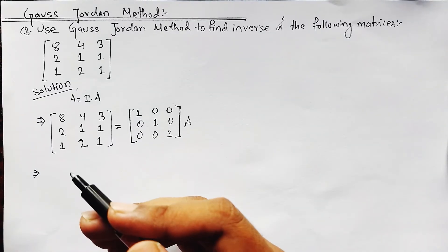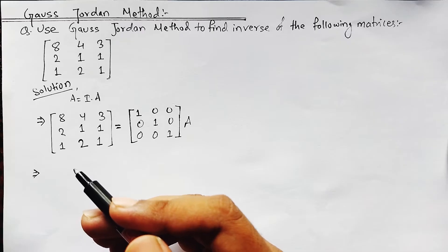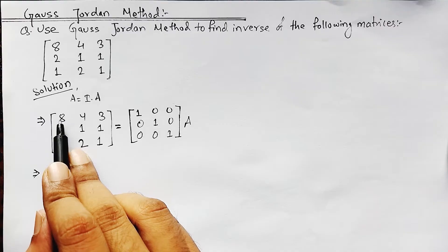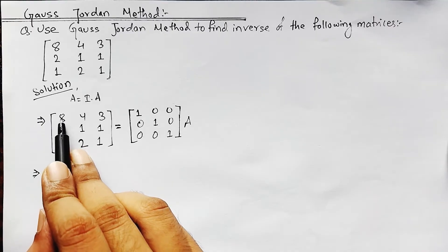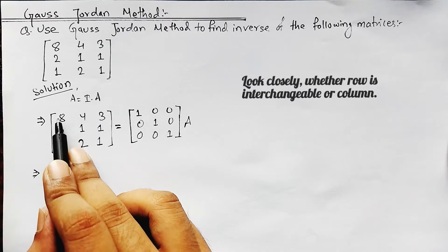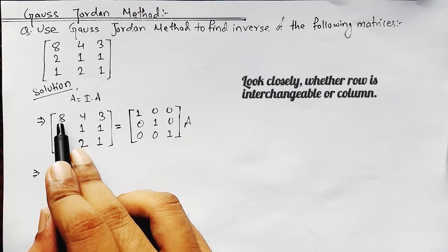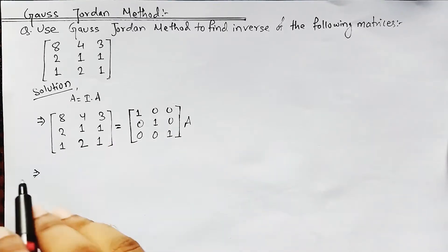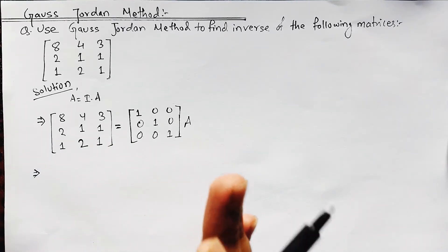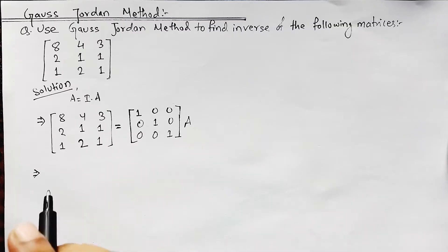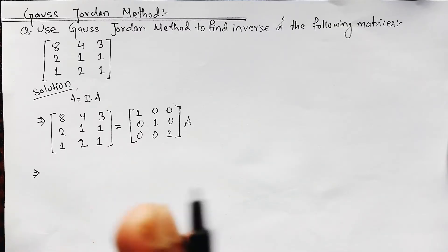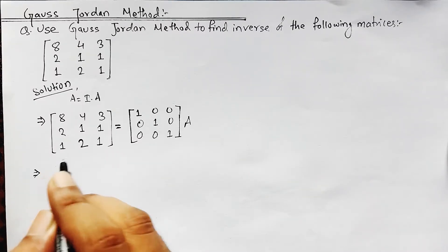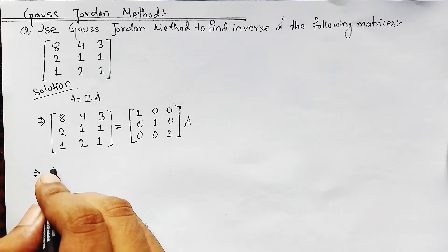We can add, multiply, subtract, or divide to make elements zero or unity. We could divide row 1 by 8 to make element a₁₁ equal to 1, or we can simply interchange rows. Here I am going to demonstrate the matrix property of interchanging rows or columns. I will interchange two corresponding rows — specifically R1, R2, and R3.